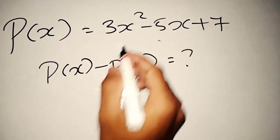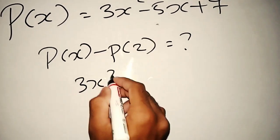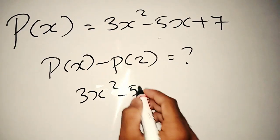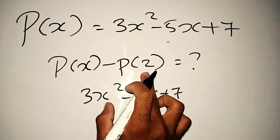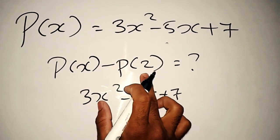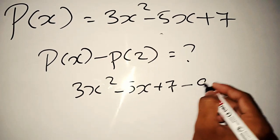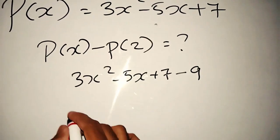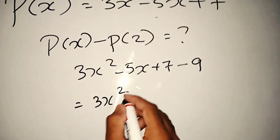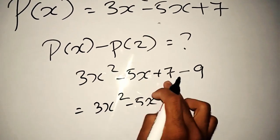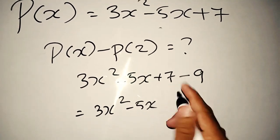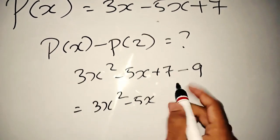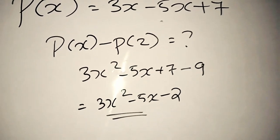P of x is equal to 3x² minus 5x plus 7. P of 2 is equal to 3x² minus 5x. That is equal to 9x². 9x² is equal to minus. The answer is 3x² minus 5x minus 2.